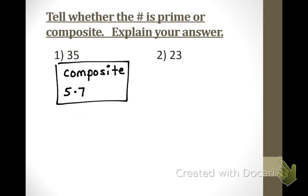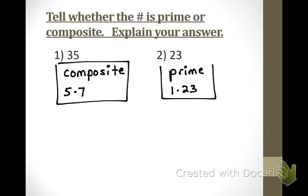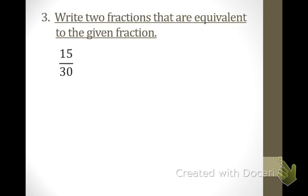Next one, 23. Katie? It's prime. Why is it prime? It's only 1 times 23. 1 times 23 is the only numbers you can multiply together to get 23. Excellent job. Let's go on to the next one.